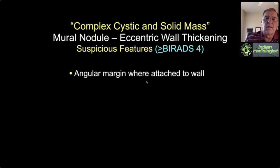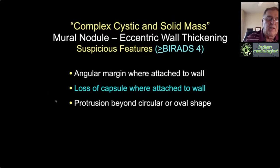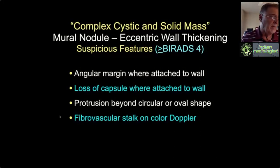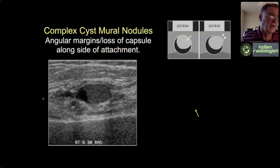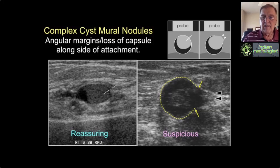At the point of attachment we don't want to see angles, loss of capsule, protrusion into ducts creating a keyhole shape, or internal vascularity. Apocrine metaplasia virtually never incites neovascularity. On the left, a reassuring complex cystic and solid mass caused by apocrine metaplasia filling about 80% of the cyst—oval shaped with an intact thin echogenic capsule all along the point of attachment. On the right, a hemorrhagic papilloma with absent capsule along the attachment point and extension into ducts creating angles and irregularity. So left is reassuring, right is suspicious.